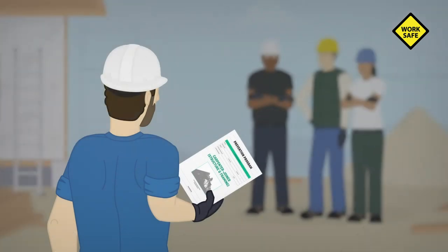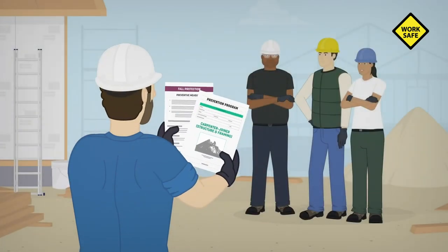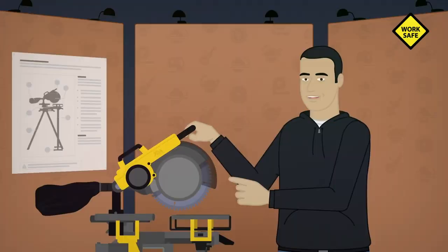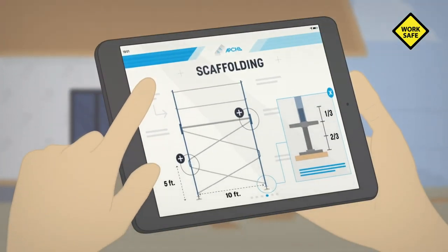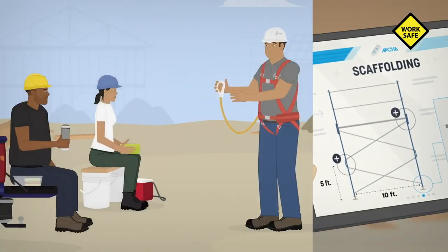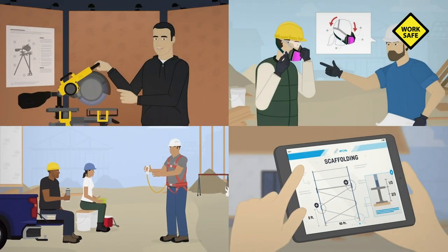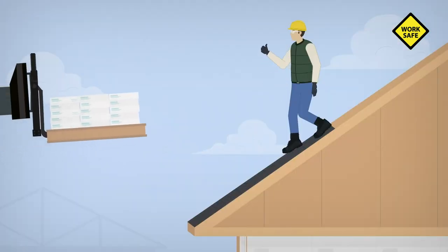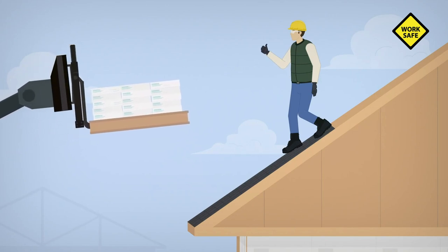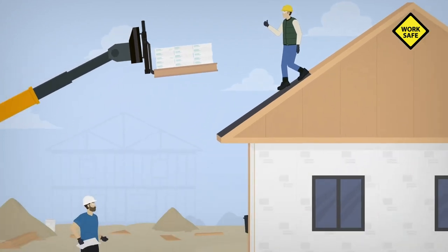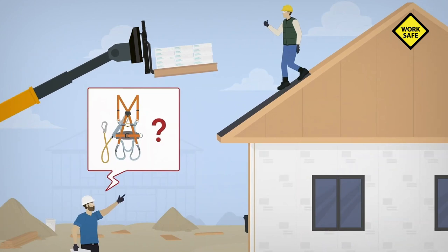For starters, you must inform your workers of the risks associated with each task. You must train all workers to ensure they work safely and in accordance with preventive measures. You must provide them with safe equipment, tools, and work procedures. You must also supervise their work and ensure compliance with all safety standards.